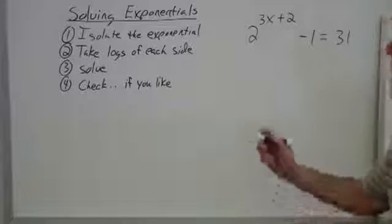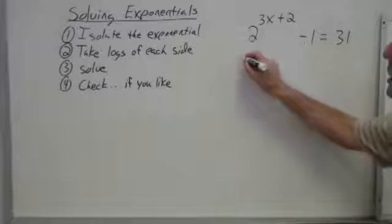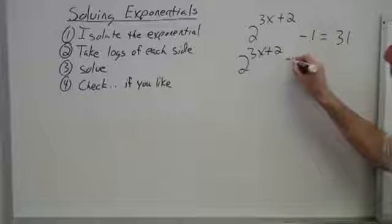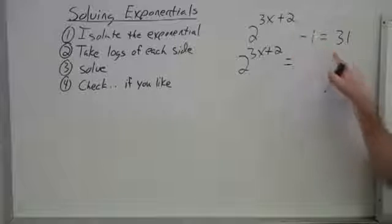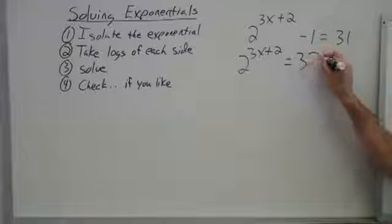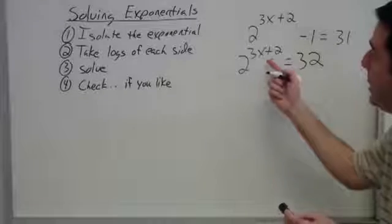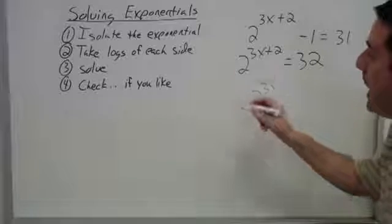For this one, first thing that needs to happen is to move the one across so that I can isolate the part that has an exponent. This one is subtracted, so as I move it to the other side, let's add it. Now, to get that exponent down on the ground where we'll be able to get at it, let's take a log of each side.